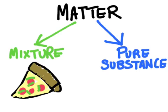In most mixtures, you can pretty easily separate the different substances. A pure substance, on the other hand, is only made up of one substance, or in other words, only one type of matter. You can't break it down into any different types of matter.